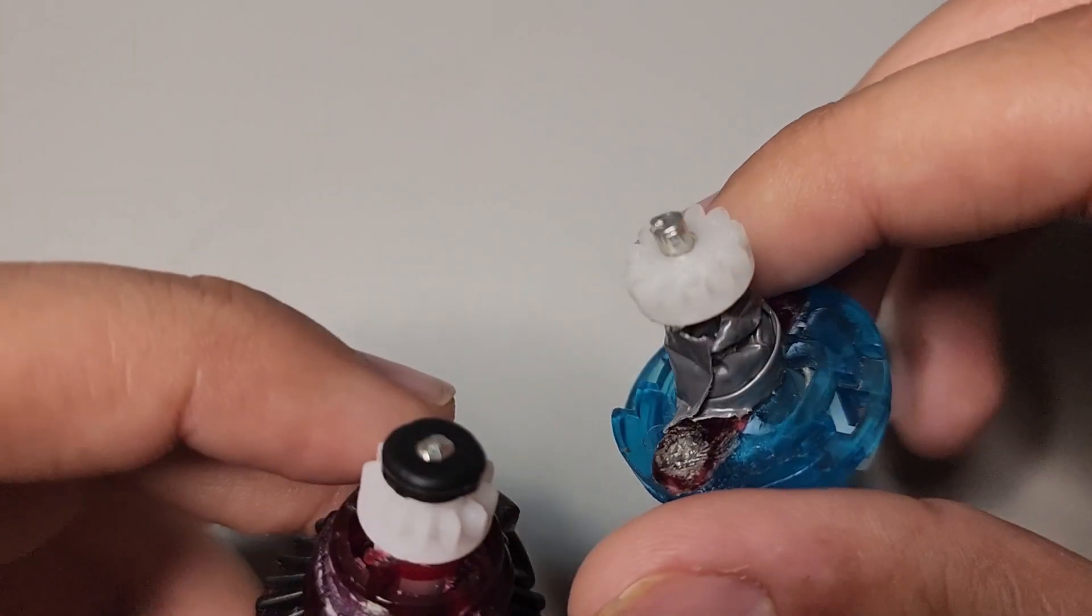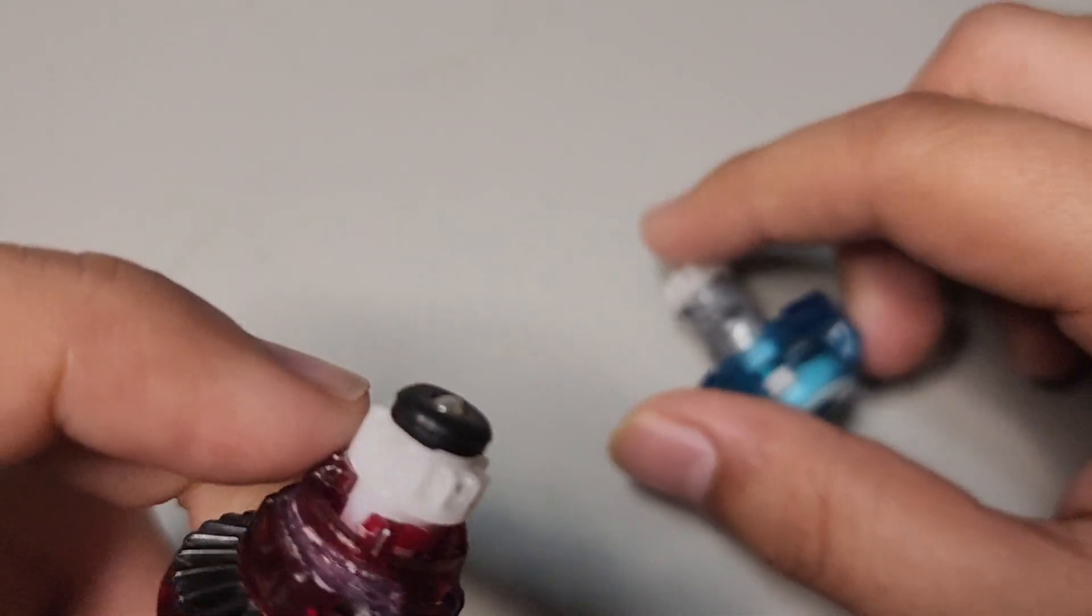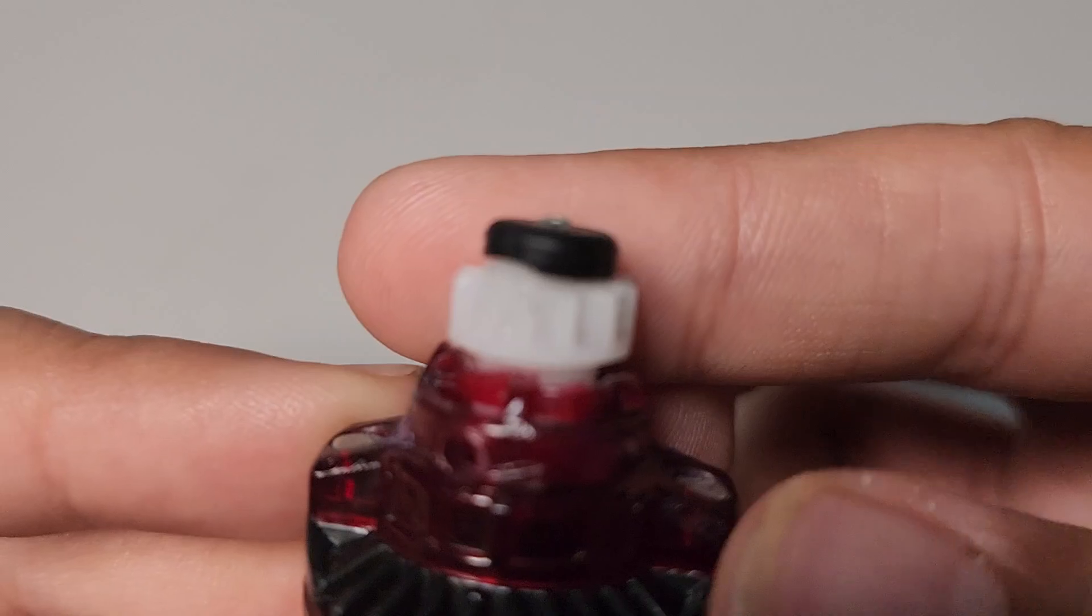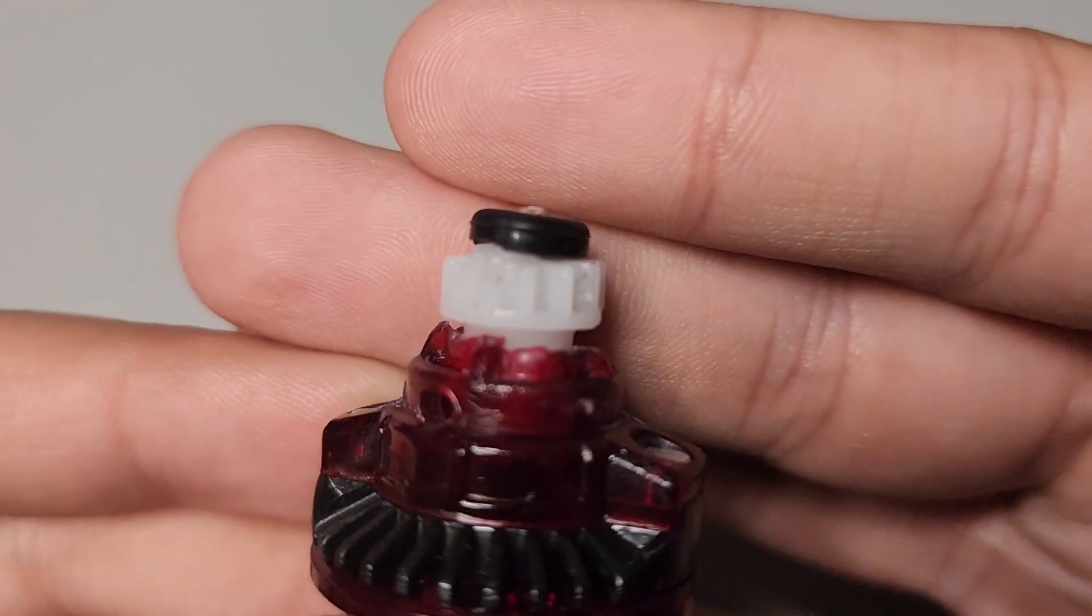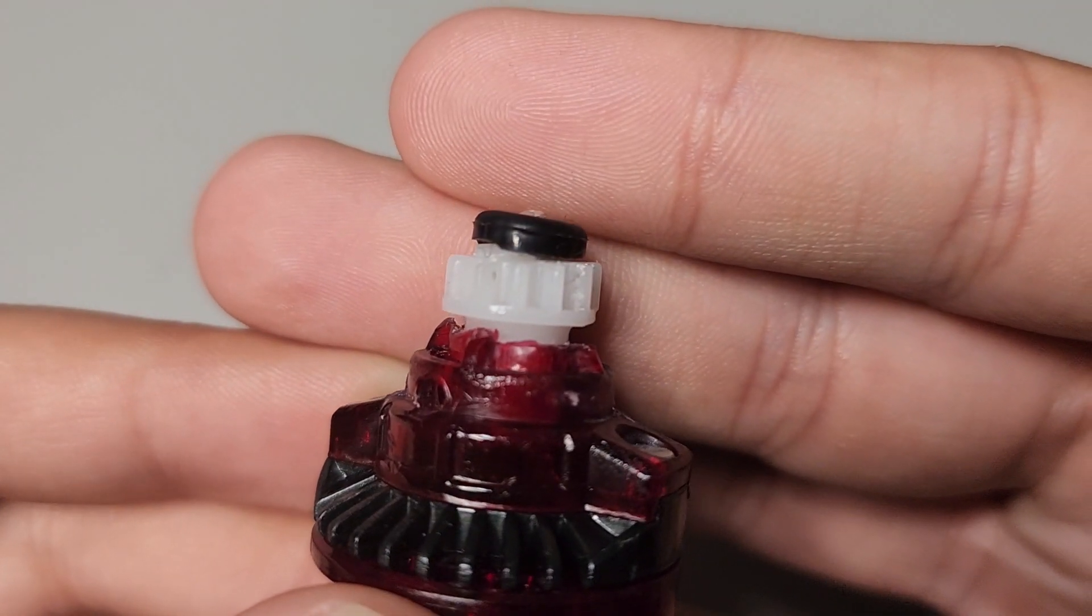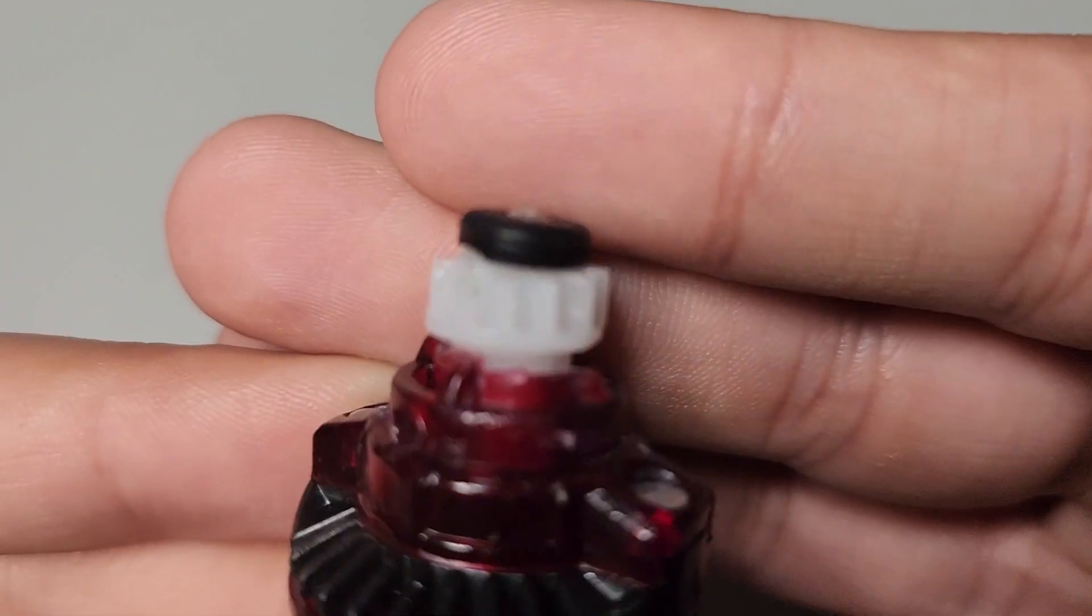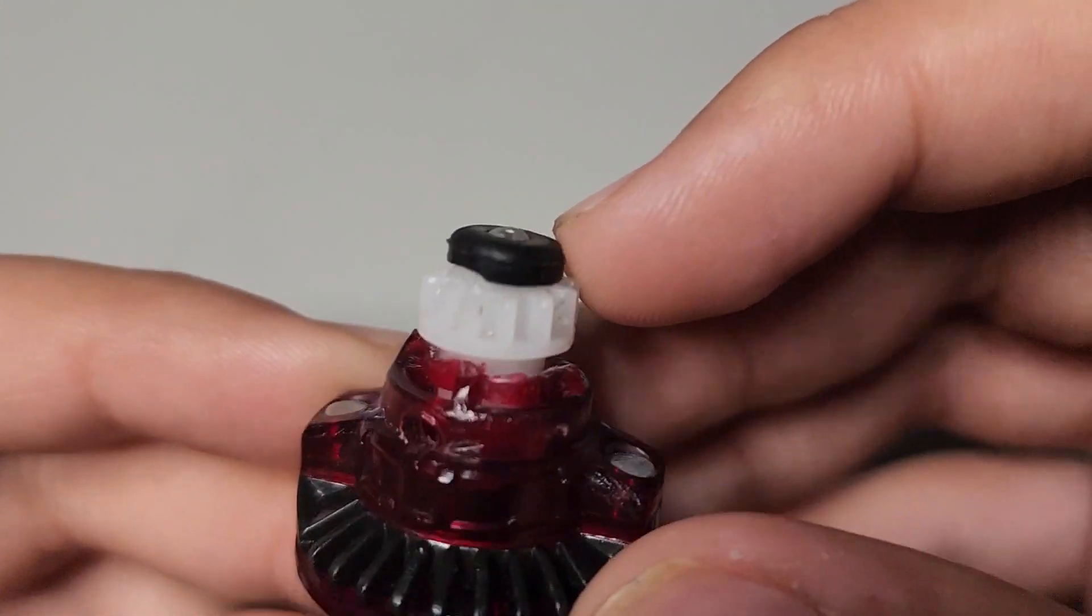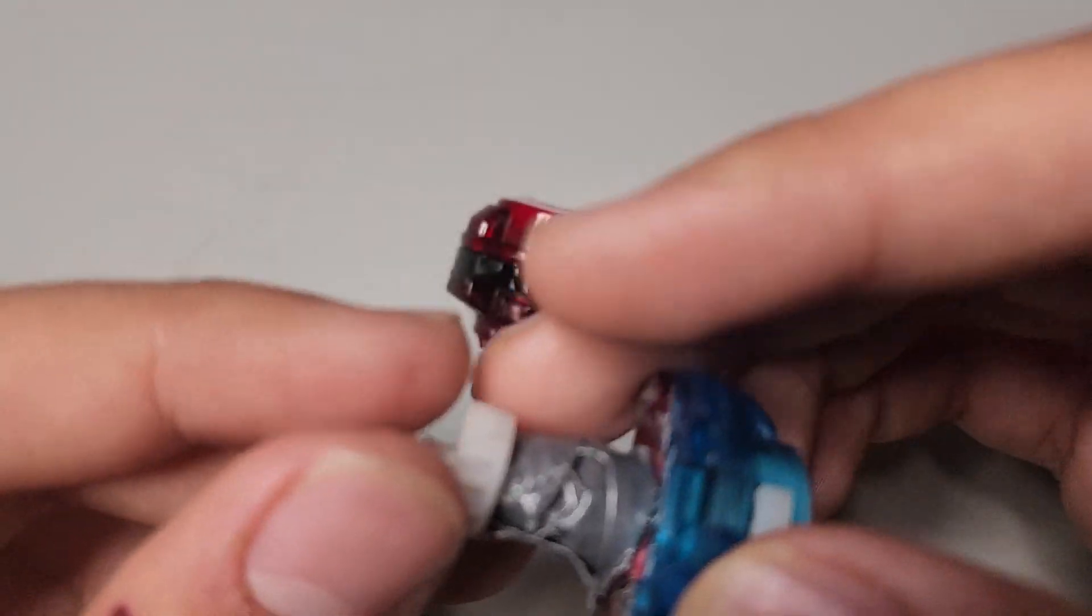This one I had to duct tape because it was kind of flimsy, and I did something slightly different to both of them. So this one's got a rubber ring around it, so I guess this would be the balance type or attack type. It's still got a metal piece for the tip.